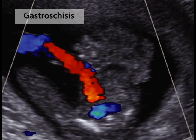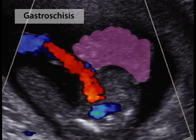Color Doppler has been added to this image to more clearly show the umbilical cord. This demonstrates that the bowel has herniated not into the cord base, but through a separate defect at the right.